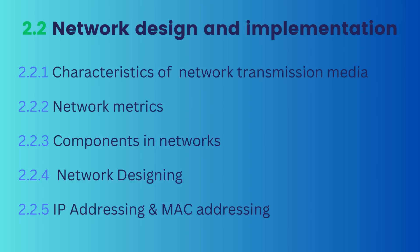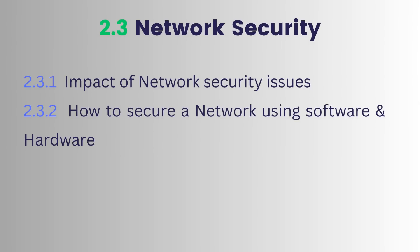Moving to the third subtopic, Network Security, we understand the impact of network security issues on individuals and organizations. We learn how to secure a network using both hardware and software — such as using a firewall, configuring security settings, and using anti-malware software. We can implement user access controls, create profiles, and implement authentication types such as passwords, two-factor authentication, and biometrics. We can also use encryption techniques for privacy and physical controls to ensure hardware is secure.